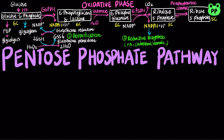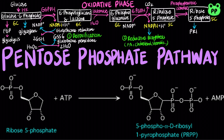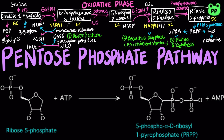Ribose 5-phosphate is an important precursor to purine biosynthesis. It is first converted to phosphoribosylpyrophosphate, or PRPP, by the enzyme PRPP synthetase. Then, PRPP is converted to 5-phosphoribosylamine by glutamine PRPP amidotransferase. Phosphoribosylamine is then converted to inosine monophosphate through a series of 9 steps, which give rise to AMP and GMP. PRPP is also a precursor to the amino acid histidine, which can be converted to histamine, a neurotransmitter and local regulator involved in various immune responses as well as allergic reactions.